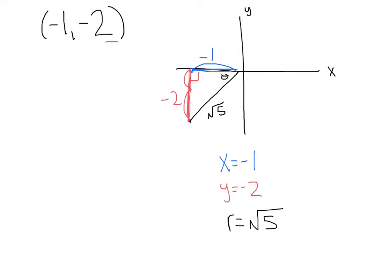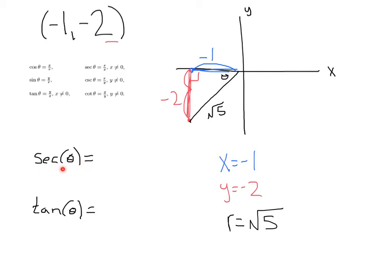Let's evaluate a couple trig functions. Secant theta — remember, secant is the reciprocal of cosine, so it's hypotenuse over adjacent. That gives us square root of 5 over negative 1. Checking with our notation, secant theta equals r over x, which is square root of 5 over negative 1 — same thing. Next, tangent theta is opposite over adjacent: negative 2 divided by negative 1, which is positive 2. Using y over x: negative 2 over negative 1, also positive 2. You can use x, y, r or opposite/adjacent/hypotenuse — either works.